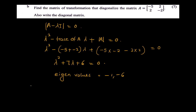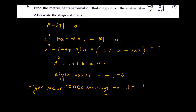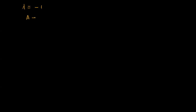Now finding eigenvectors. For the eigenvector corresponding to lambda equal to minus 1, we use A minus lambda I into x equal to 0. For lambda equal to minus 1, this becomes A plus I into x equal to 0.